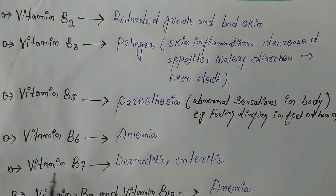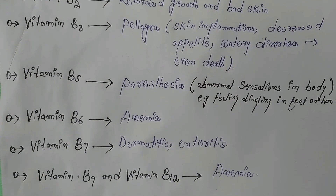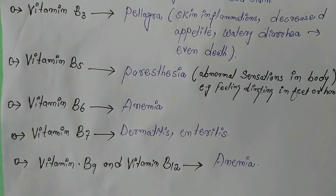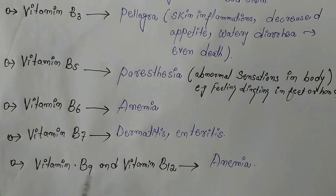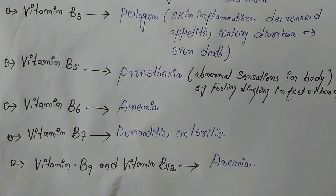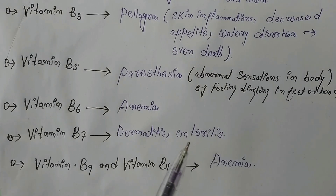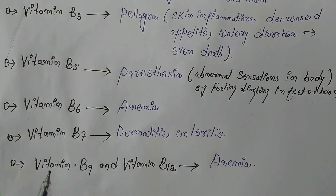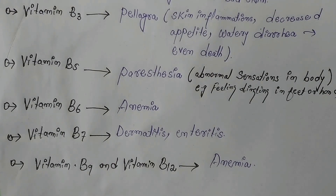Vitamin B6, B9, and B12 deficiency causes anemia — meaning red blood cells decrease in the body. Vitamin B7 deficiency causes dermatitis and enteritis. This completes our topic on vitamins. I hope you understood everything explained. This is a very important topic and a question from it appears in almost every competitive exam.